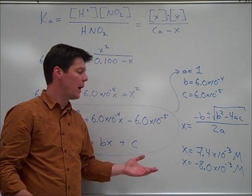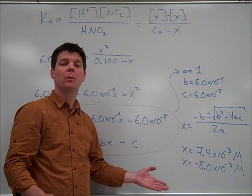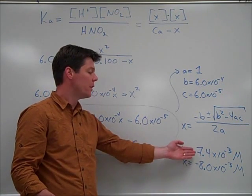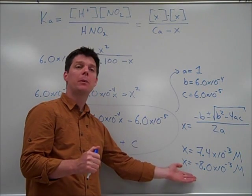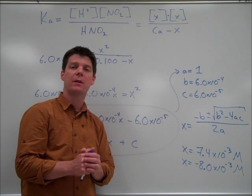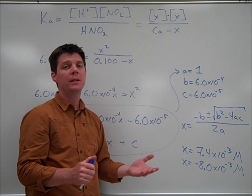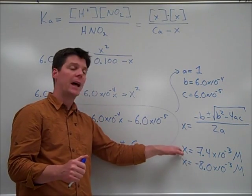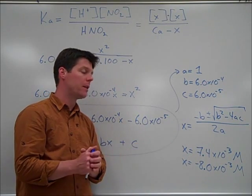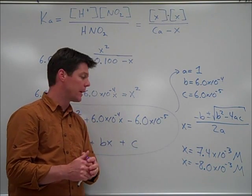When we solve this quadratic, we actually wind up finding two different possible solutions for x. The first being 7.4 times 10 to the minus 3 molar. The second being negative 8.0 times 10 to the minus 3 molar. Now, because molarity cannot be expressed in negative values, we can conclude that 7.4 times 10 to the minus 3 molar is the correct answer.